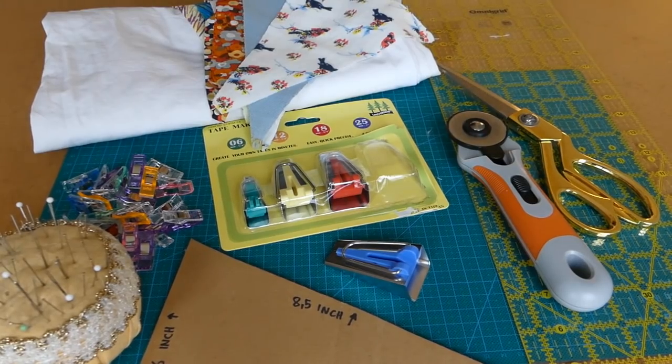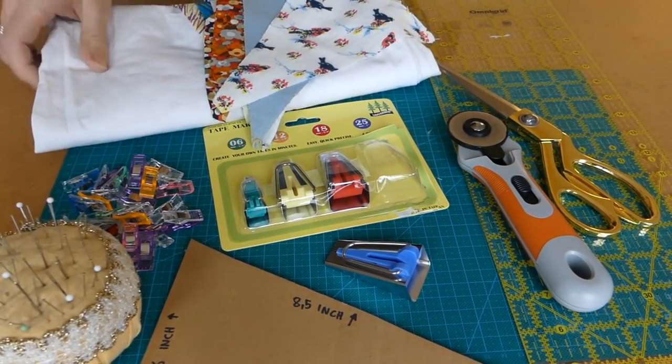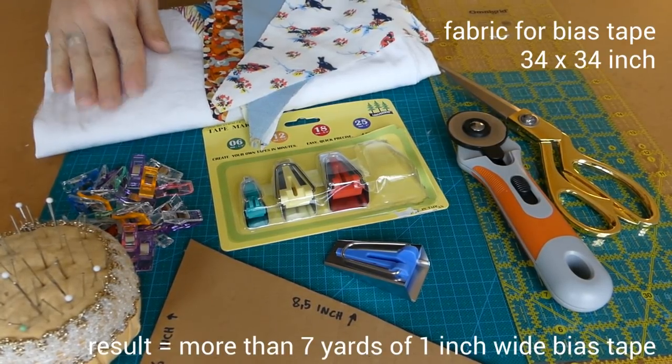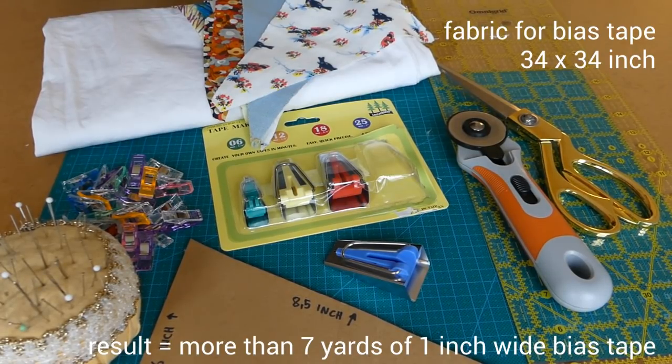So you'll need fabric for the bias tape. I used an old sheet and I used a square of 34 by 34 inch which gave me more than seven yards of one inch wide bias tape.